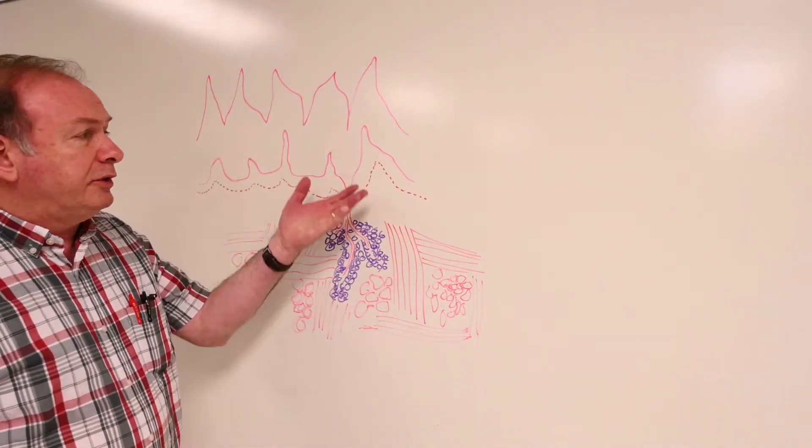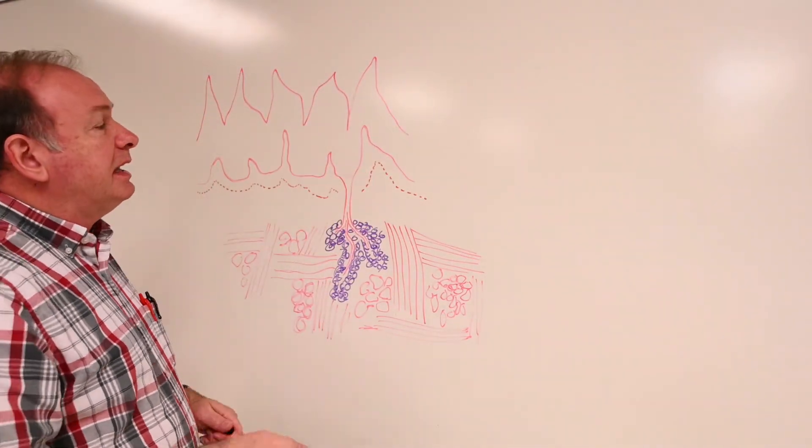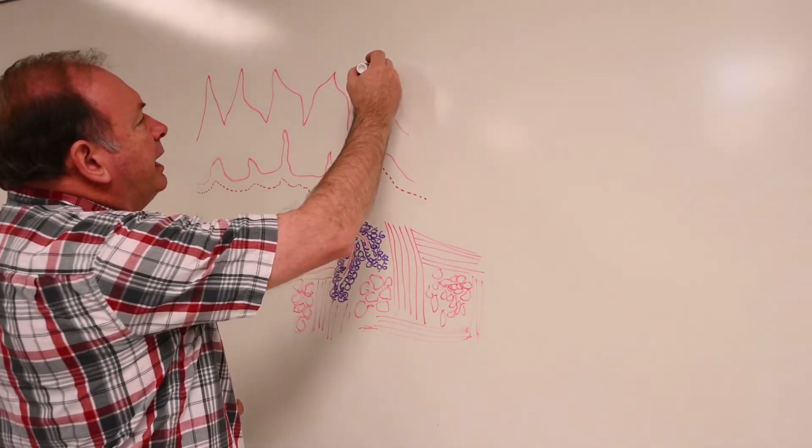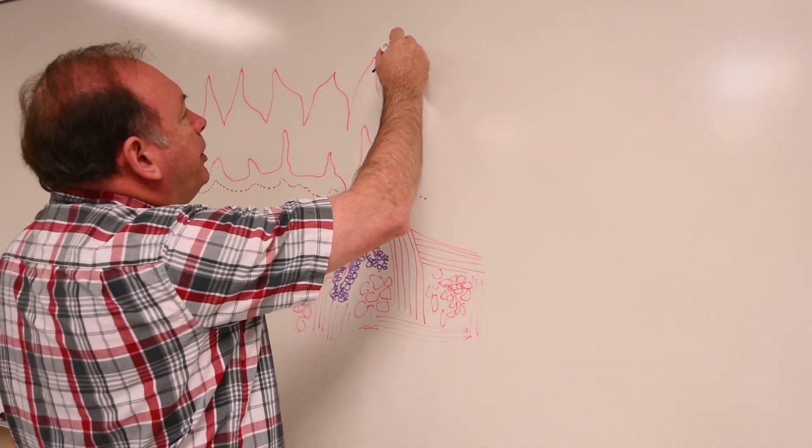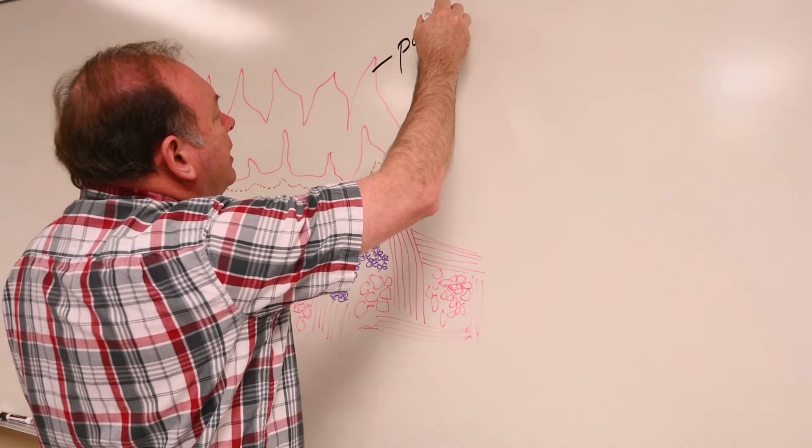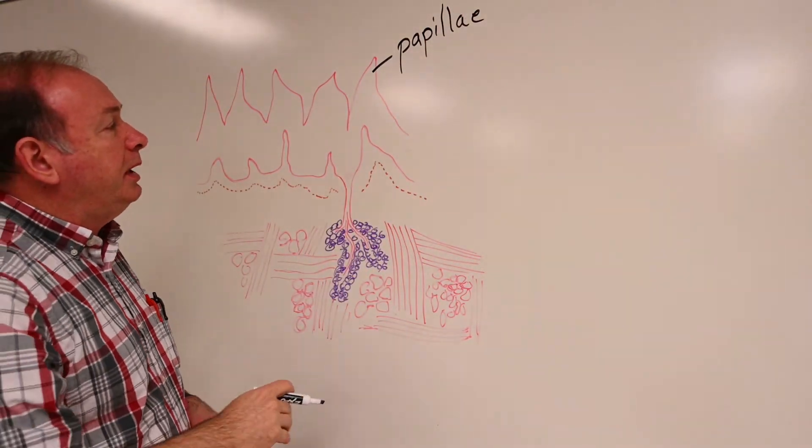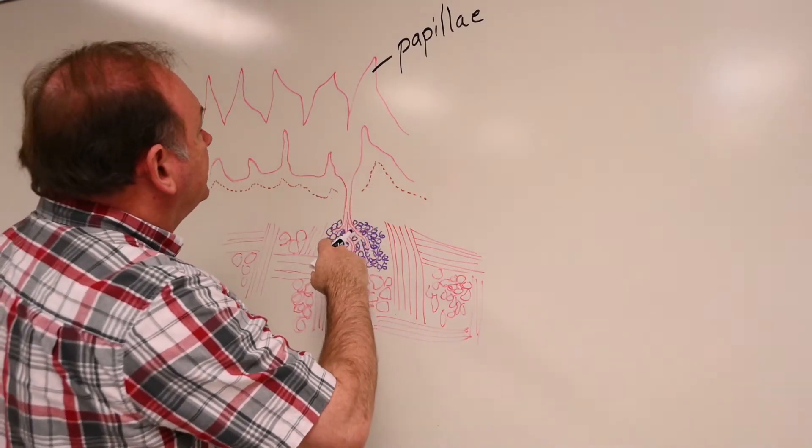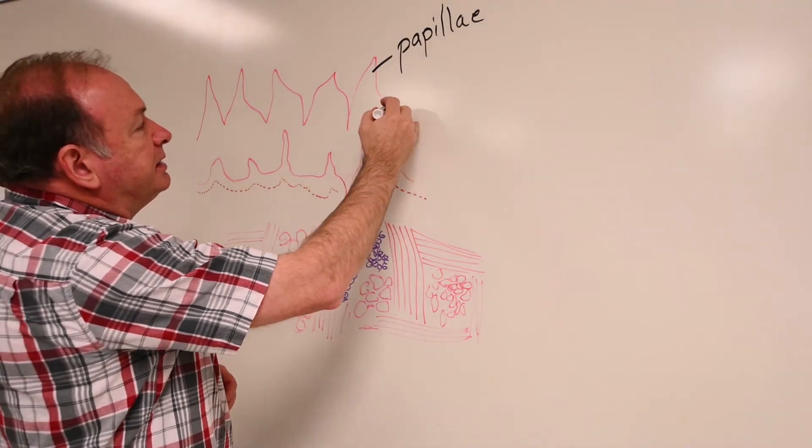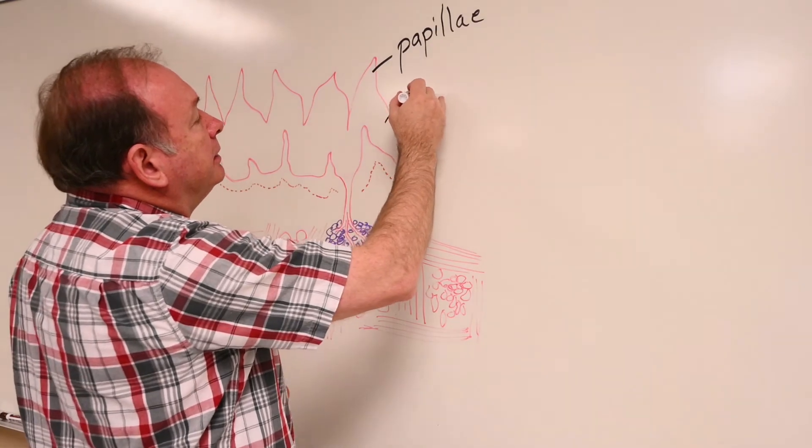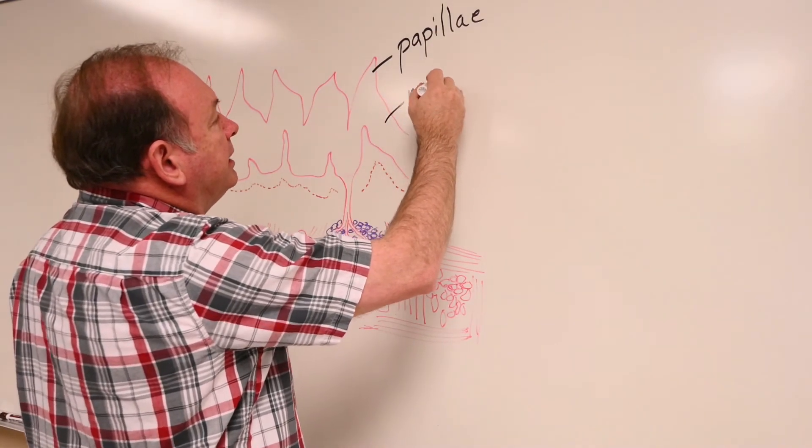So, a rough drawing here of what's going on inside the tongue and the tongue histology. We have here papillae on the surface of the tongue. I've drawn a series of filiform papillae. They could be fungiform and other forms there. The epithelium up here, this is non-keratinized stratified squamous epithelium.